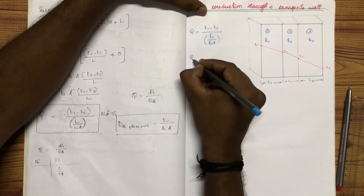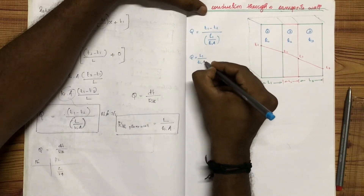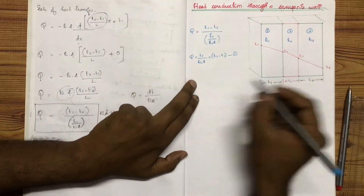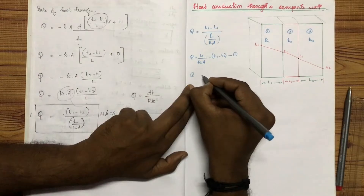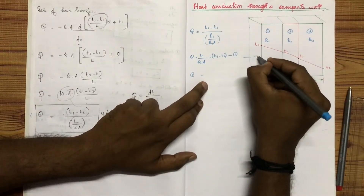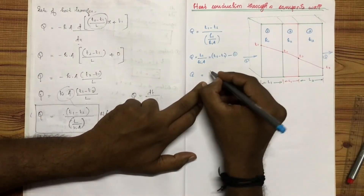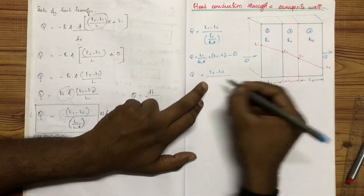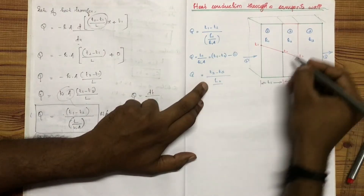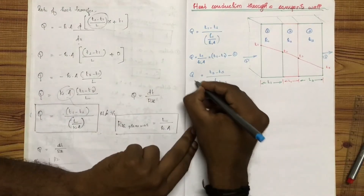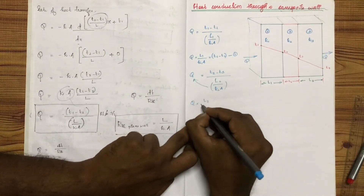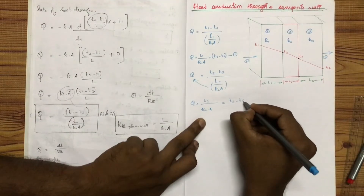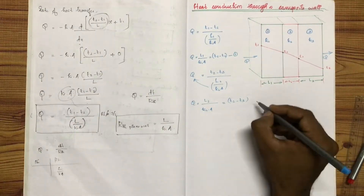T1 minus T2 equals Q into L1 by K1 into A. This is equation number 1. The equation for the second wall: Q equals T2 minus T3 divided by L2 divided by K2 into A, so Q into L2 by K2 into A equals T2 minus T3. This is equation number 2.